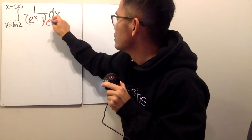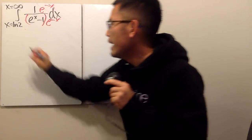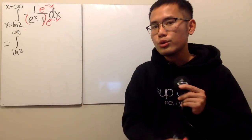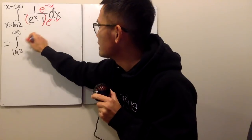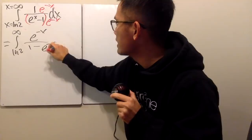And the easiest way to do this is, I'm just going to multiply the top and bottom by e to the negative x, e to the negative x. Why? Because it works out wonderfully. And as you can see, this right here is still going to be ln 2 to infinity. I don't need to go to u world. On the top we have e to the negative x over, this times this minus this times this, is e to the negative x dx.